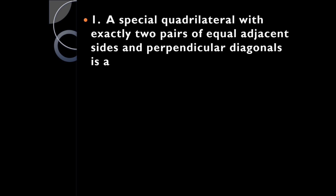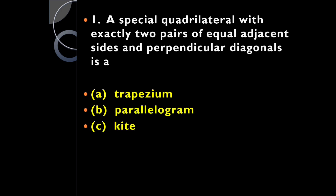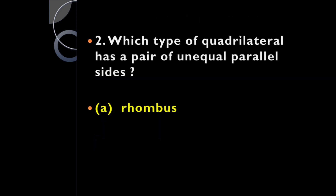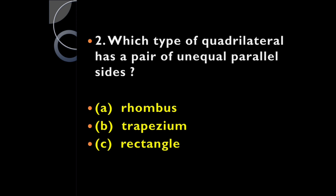A quadrilateral with exactly two pairs of equal adjacent sides and perpendicular diagonals is: a trapezium, parallelogram, kite, or rectangle? It's a kite, because a kite is a quadrilateral which has exactly two pairs of adjacent equal sides and perpendicular diagonals. Which type of quadrilateral has a pair of unequal parallel sides?